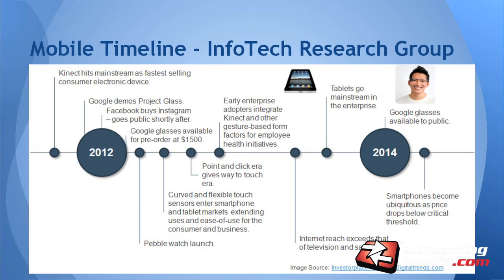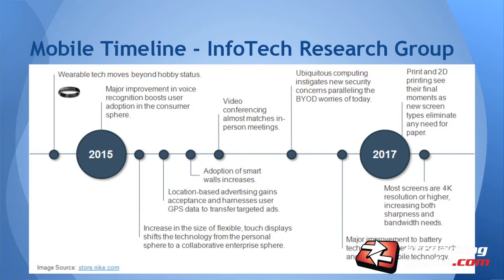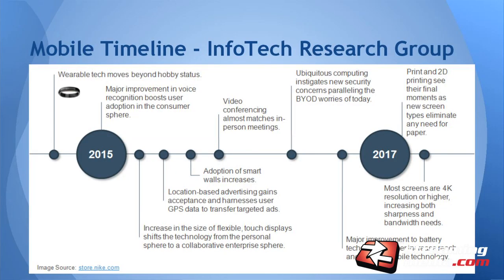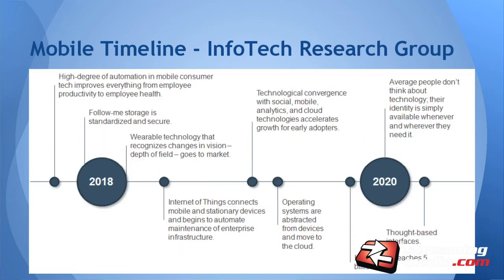Moving forward, we get wearable technology — the Fitbit, wristbands — going from a hobby for geeky people to mainstream adoption, just like the wristwatch. Then video conferencing: Infotech predicts it will become just like in-person meetings and affordable to everyone. Cisco TelePresence says that today, but it requires enormous investment. Give it a couple years and everything shrinks. They predict that by 2017, printing and 2D information will become a thing of the past because screens are all around us — including a screen in your eyeball, like Glass.